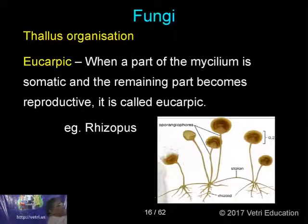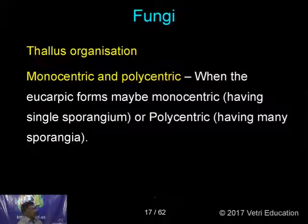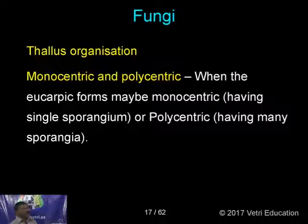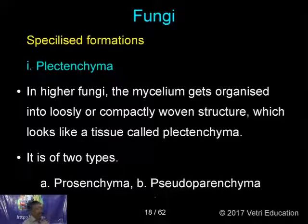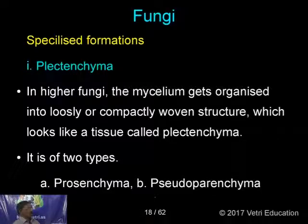Eucarpic forms may be monocentric — having a single sporangium — or polycentric, having many sporangia. Some specialized forms are found in fungi where tissue-like structures are formed by the union of hyphae, called plectenchyma. In higher fungi, the mycelium gets organized into loosely or compactly woven structures which look like tissue, called plectenchyma.